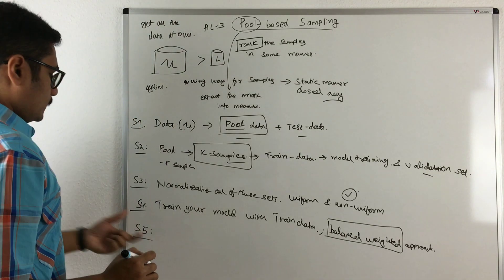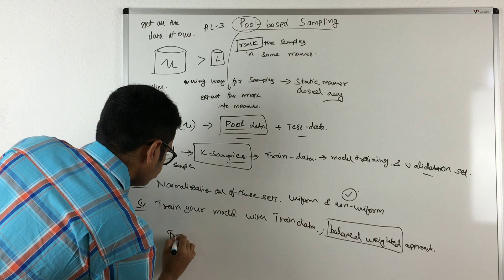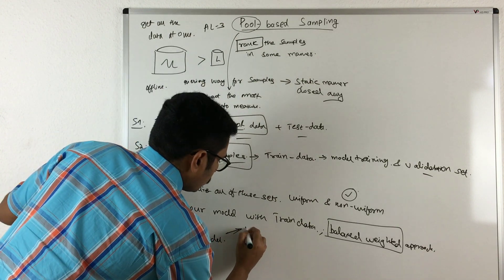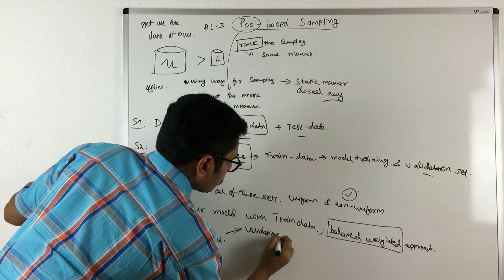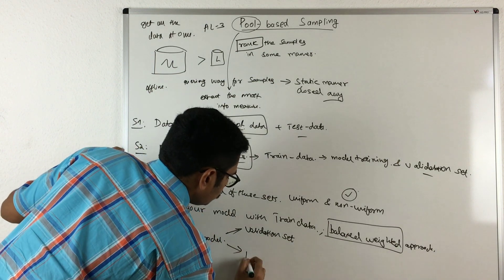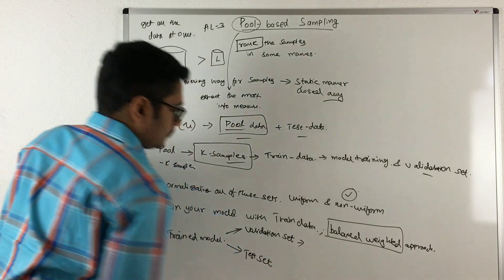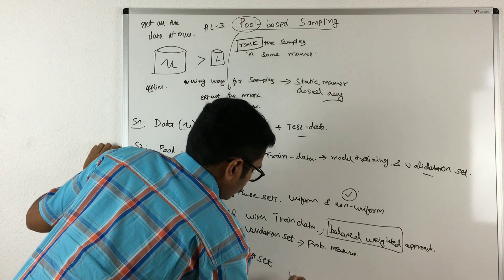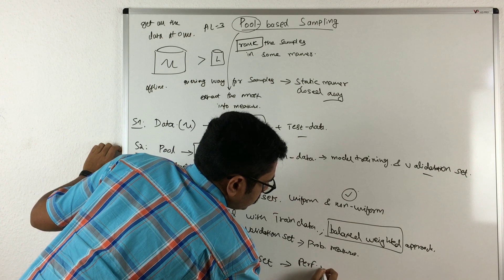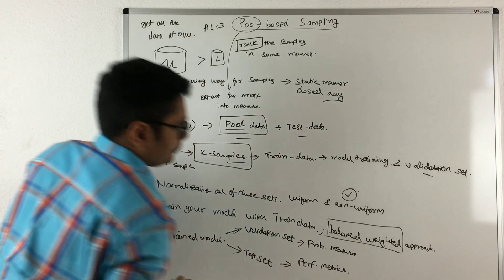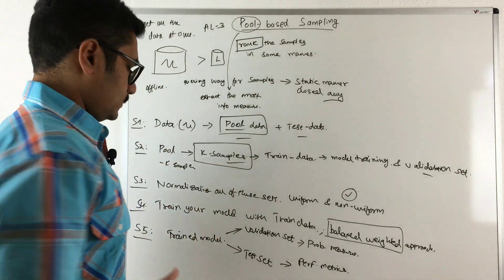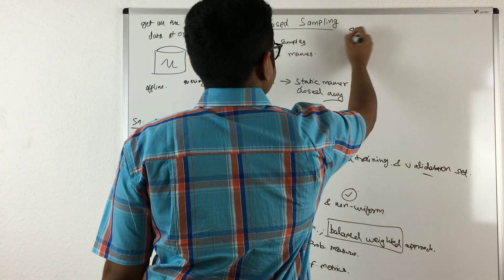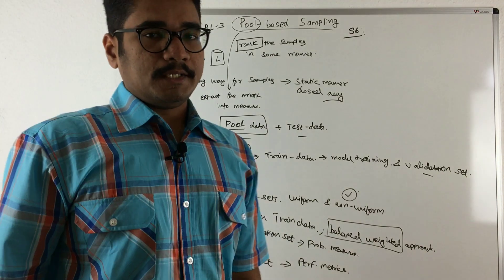In step five, you take this trained model and use it with your validation set and also with your test set. With the validation set, you get probability measures. With the test set, you get performance metrics — measures of how well the model fits the data. Once you perform this, you then need to find the uncertainty in your dataset.